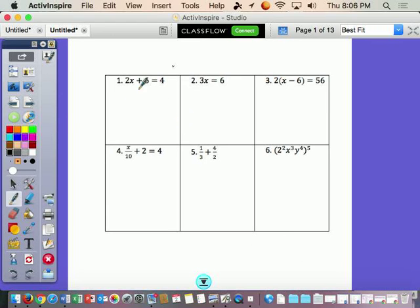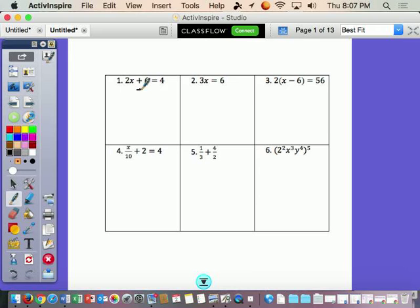So first thing, going to subtract 6 from both sides. That is going to cancel out and give me 2x equals negative 2. Next thing I'm going to do is divide both sides by 2 to cancel out my 2, that's going to give me x equals negative 1.